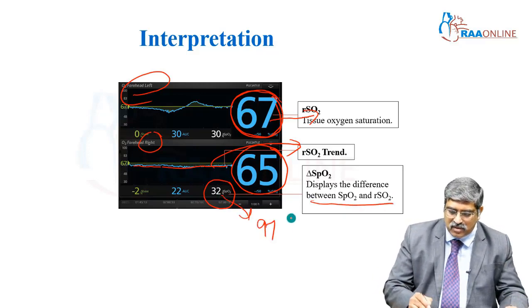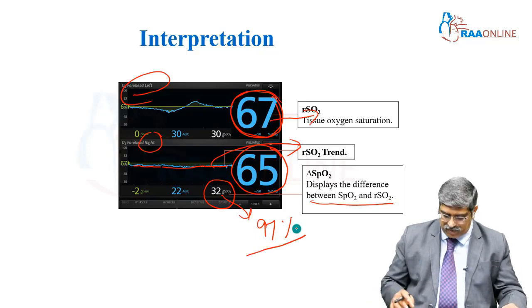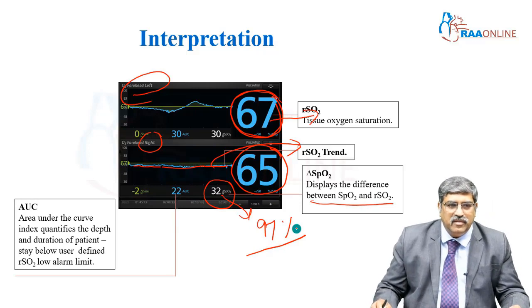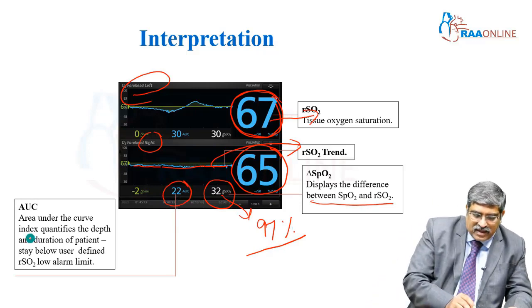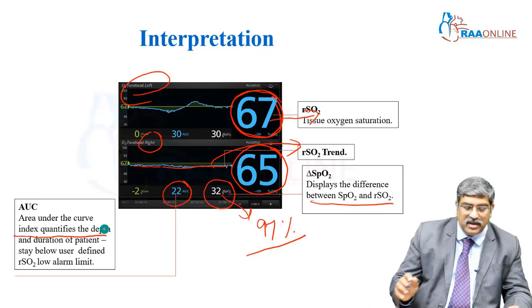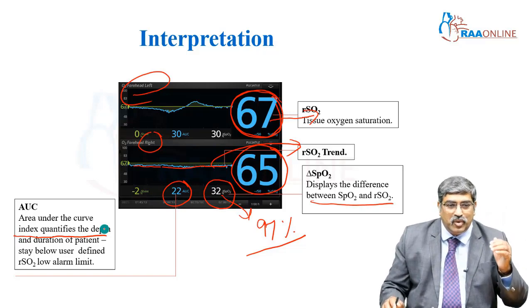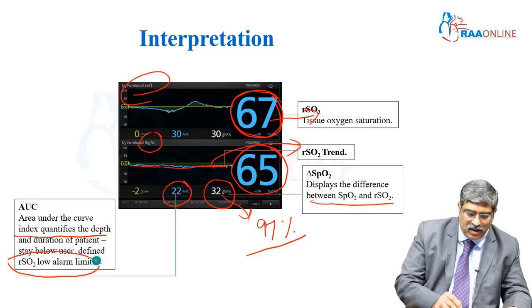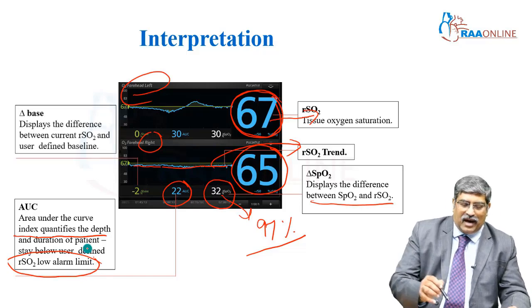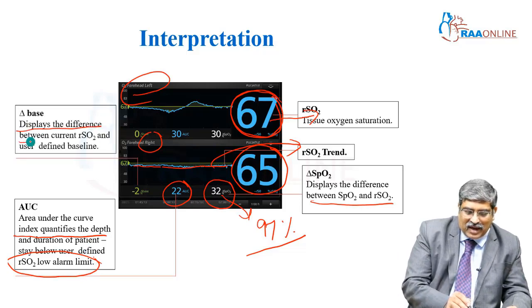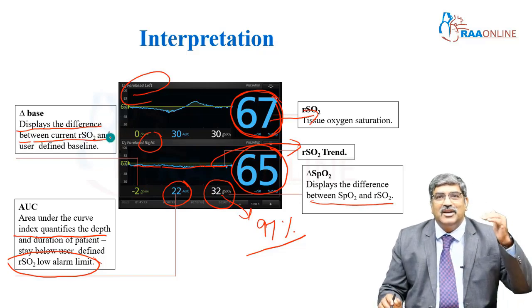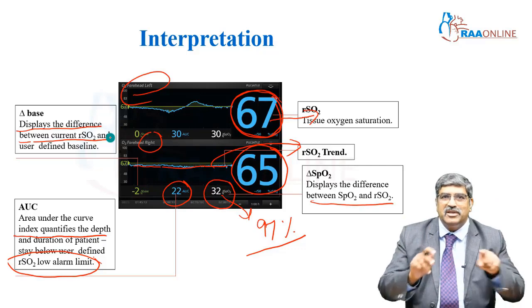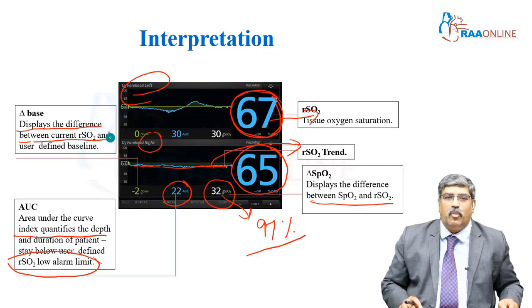Here it is 32, meaning arterial oxygen saturation is around 97 percent. And this AUC — area under the curve — which is 22, is an index that quantifies the depth and duration of patient stay below the alarm limit. Delta base is the difference between the current reading and the user-defined baseline. These are the different variables displayed on the monitor.